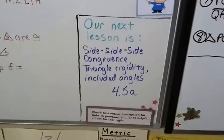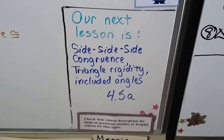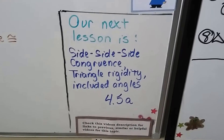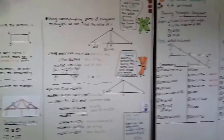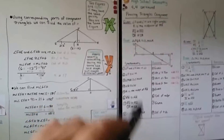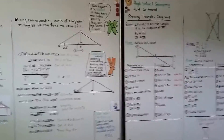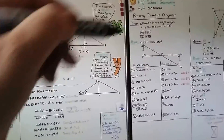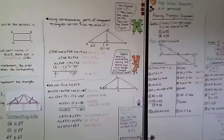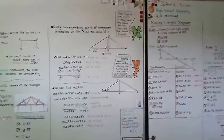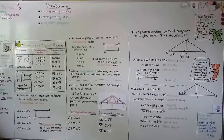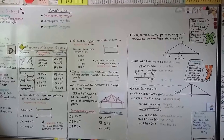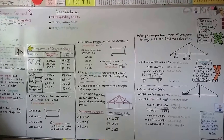Our next lesson is side-side-side congruence. We're going to talk about triangle rigidity and included angles in Lesson 4.5a. My advice is: whenever you see me doing a proof, freeze the video and write down all the statements, all the reasons, and copy the drawing — because you'll encounter similar problems in your homework. Make sure you're writing down all the properties, definitions, theorems, corollaries, and axioms.